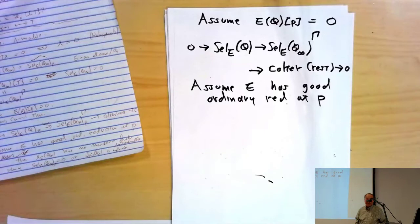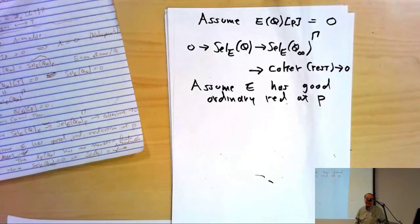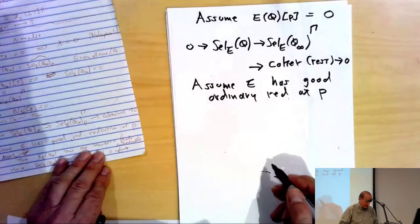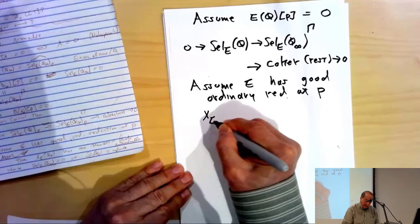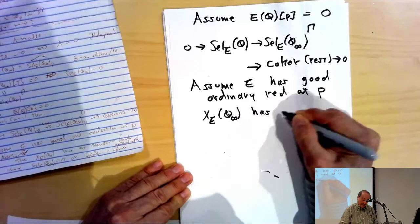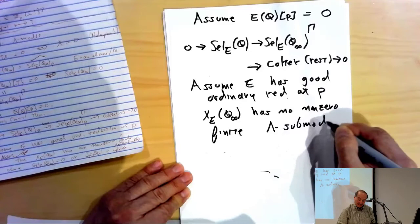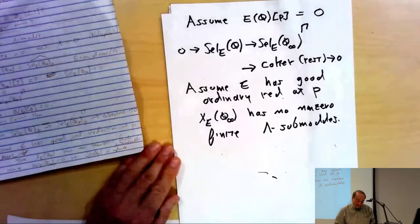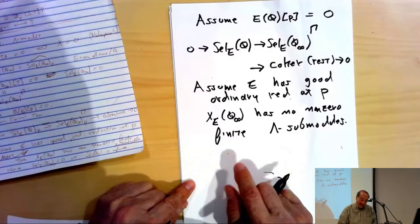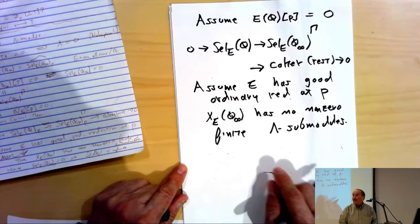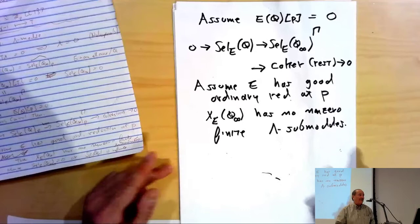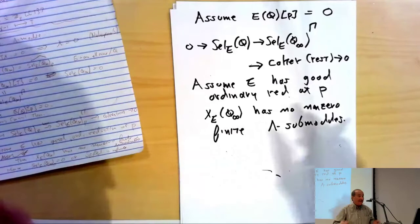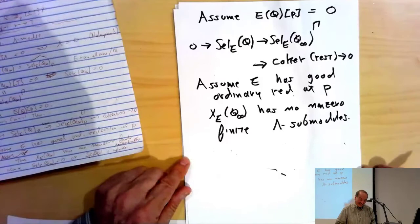One key remark: X_E(Q∞) has no nonzero finite Λ-submodules. This is a very useful property. However, this is a tricky question — if you change Q to a finite extension and look at the cyclotomic Z_p extension of a finite extension of Q, then this nice property is not always true. There are examples, unfortunately, where you have nontrivial finite submodules in this situation.